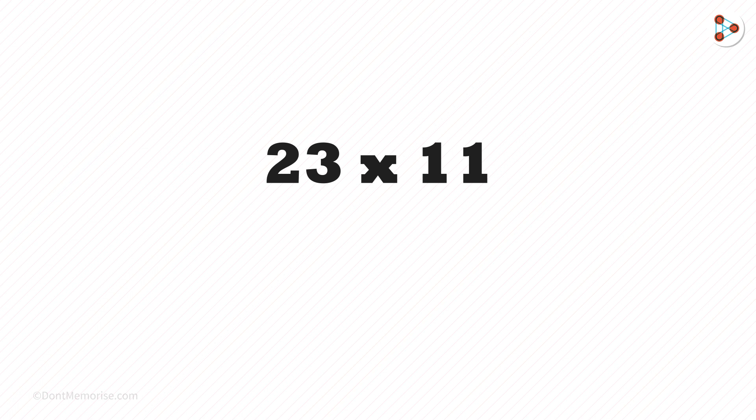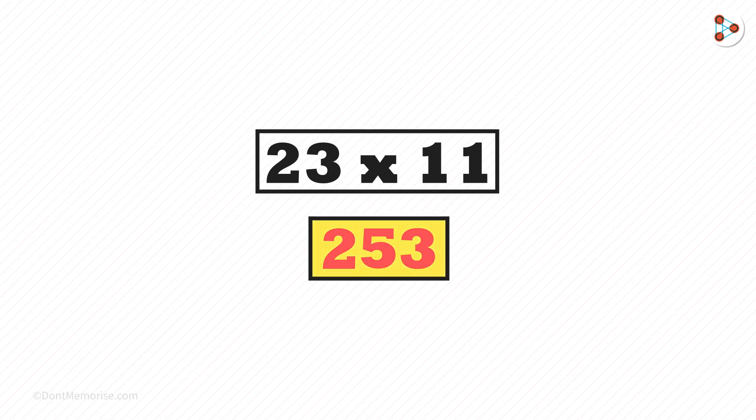Let us take an example. 23 multiplied by 11. The trick here is very simple. Write the first digit 2. 2 plus 3 is 5. And then write the last digit as it is. That is 3. Here is the answer. 23 multiplied by 11 is 253.